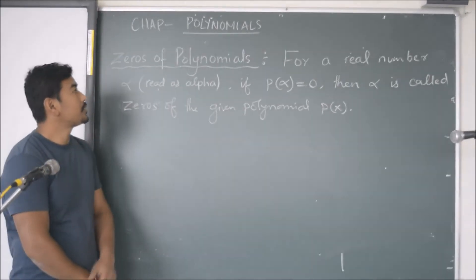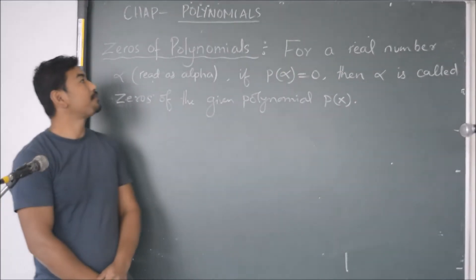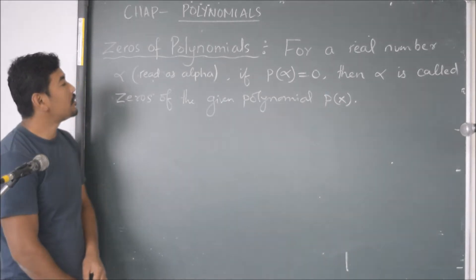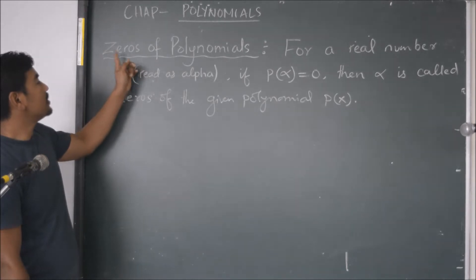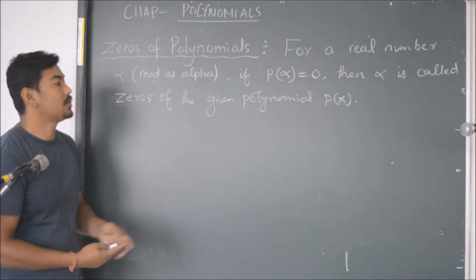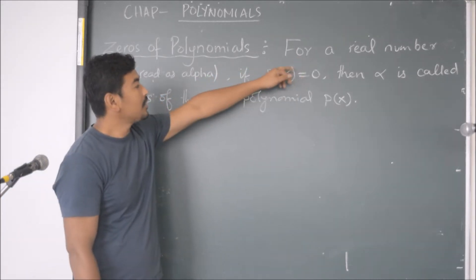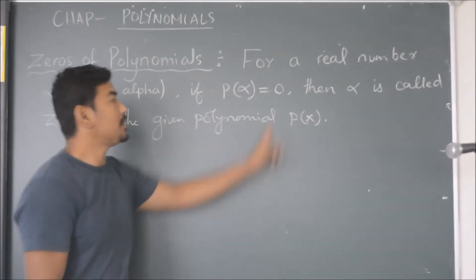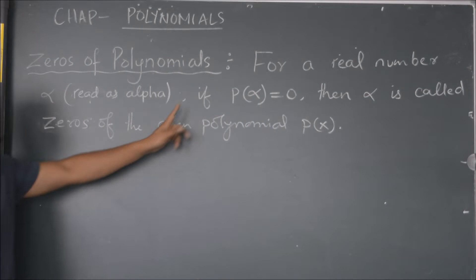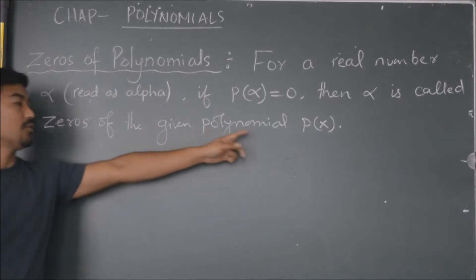Hello students, this is the second lecture of the chapter Polynomials. Today we are going to discuss an important concept of polynomials, which is zeros of polynomials. The definition is: for a real number alpha, if p(alpha) equals 0, then alpha is called the zero of the given polynomial p(x).